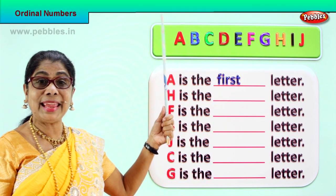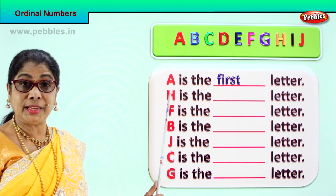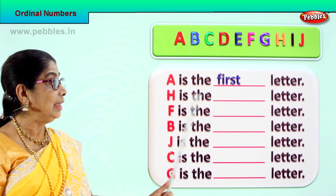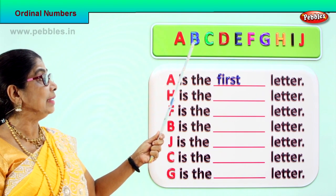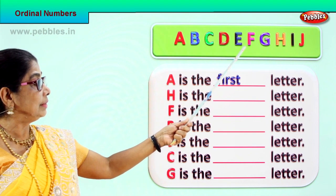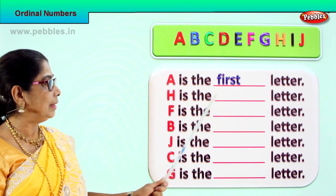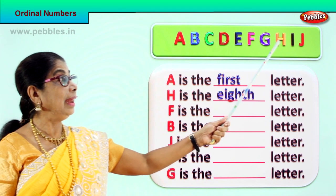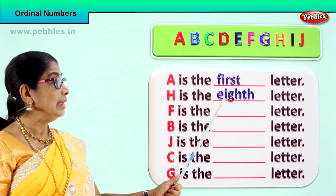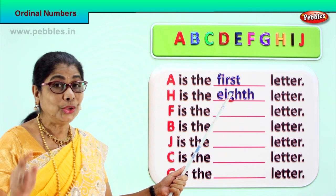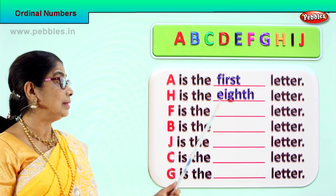A is the first letter. Good. Now tell me, we have H here. What ordinal number is H? Let's count: first, second, third, fourth, fifth, sixth, seventh — H is in the eighth place. H is the eighth letter. According to the ordinal number, it's the eighth. All you need to do is add an H at the end to spell eighth. Spell with me.